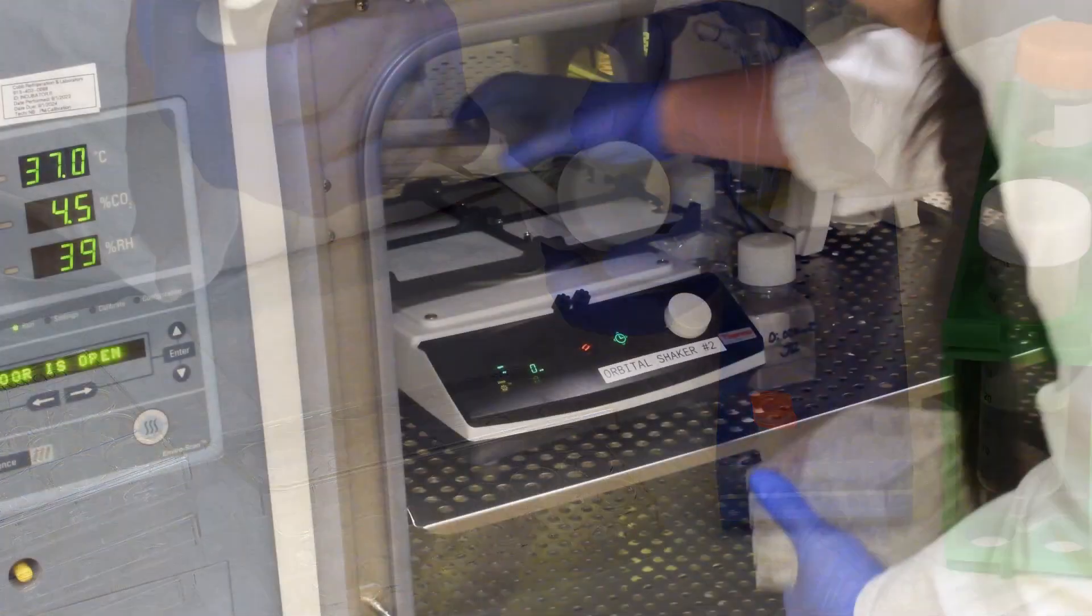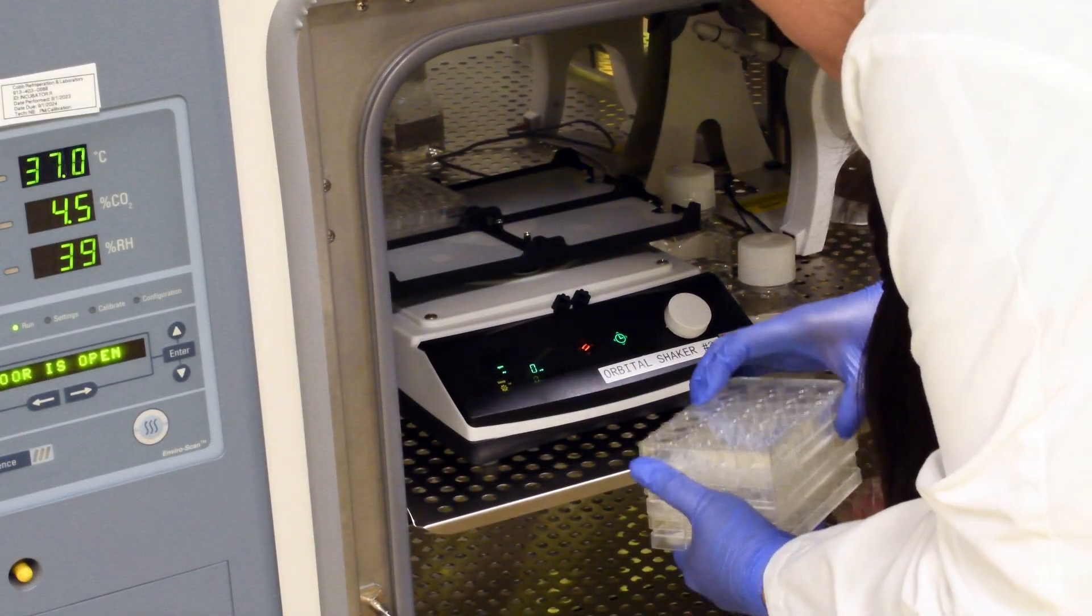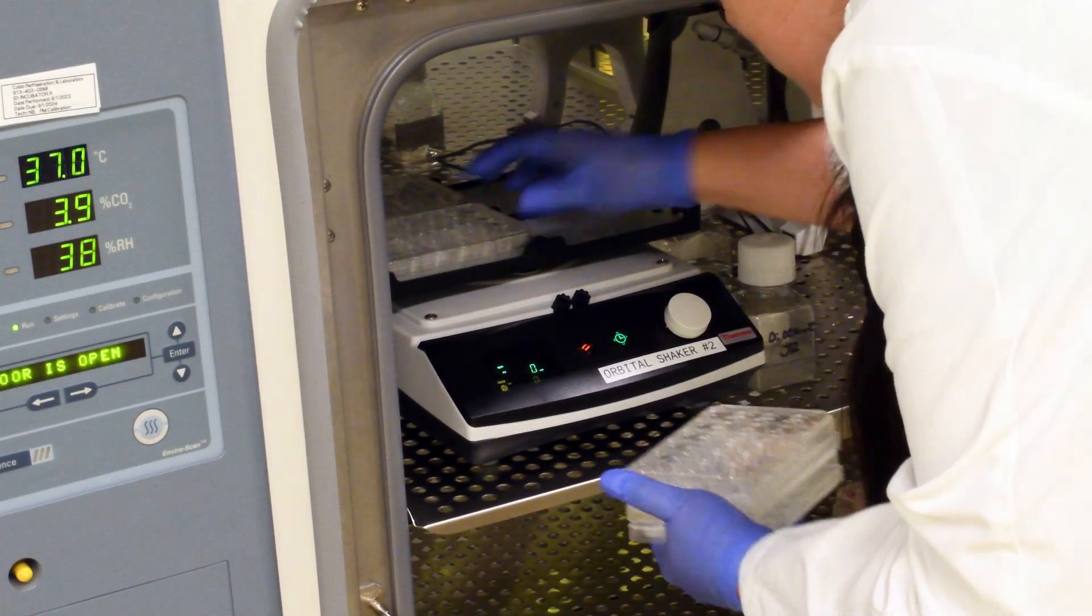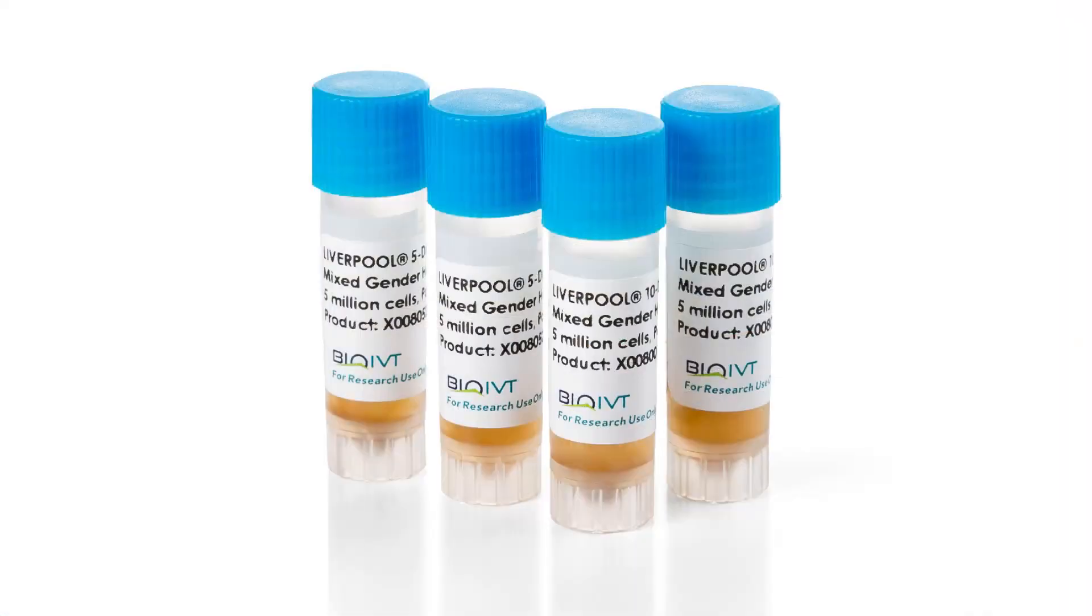Preplate the test article into wells and place the plates in 37 degrees Celsius incubator. After the plates are loaded and placed in the incubator, begin thawing the hepatocytes.